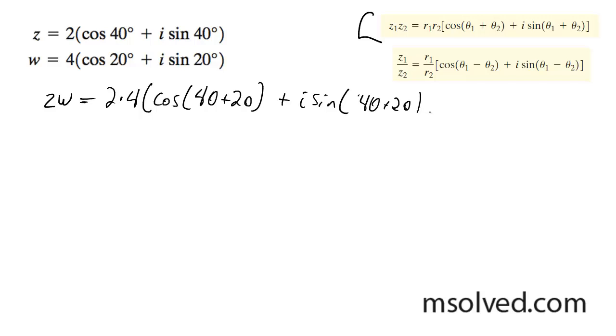And overall, this is going to give us 8 times the cosine of 60 degrees plus i sine of 60 degrees.